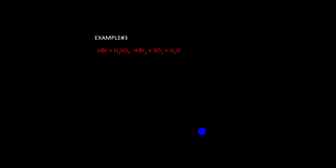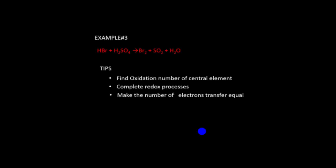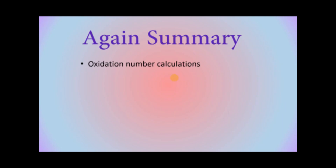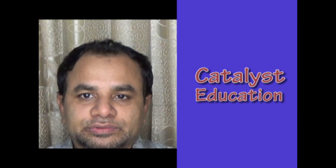As a practice problem: balance the reaction of sulfuric acid with bromine to give sulfur dioxide and water. The steps are: first find oxidation numbers, then identify oxidation and reduction half-reactions, then balance the number of electrons transferred, and finally add the two half-equations to get the overall balanced equation.